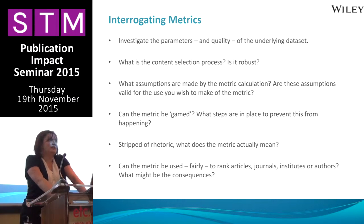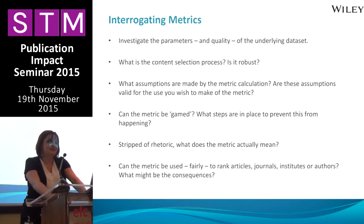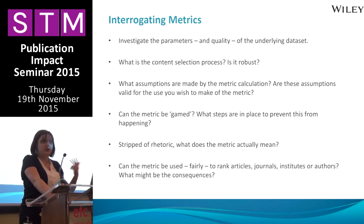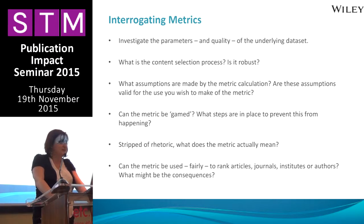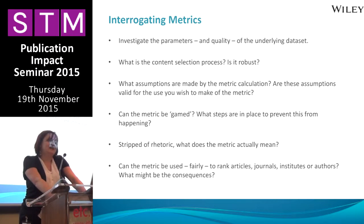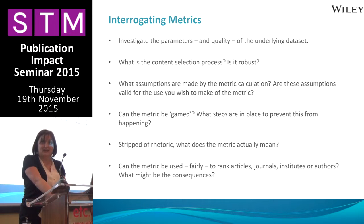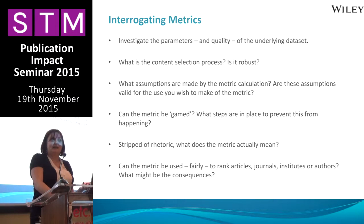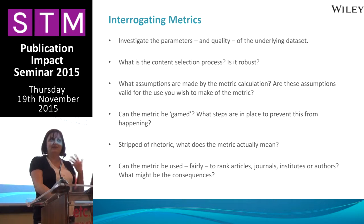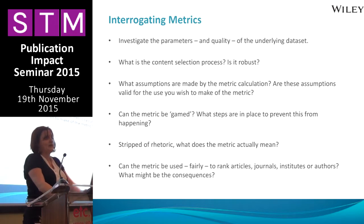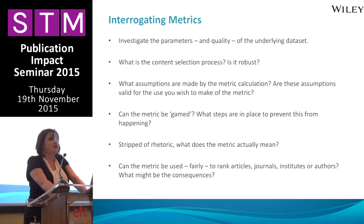Also consider the content selection process. Is it something like an autonomous citation index like Google Scholar indexing everything from key websites? Is it selective content based on peer review or other features, such as Thomson Reuters or Scopus? What assumptions are made by the metric calculation — things like the completeness of the data set, the universal availability of social media, the universal availability of internet access? And how do those assumptions influence the use you make of the metric? Can the metric be gamed, and if so, what steps are in place to prevent this? Stripped of rhetoric, what does the metric actually mean?